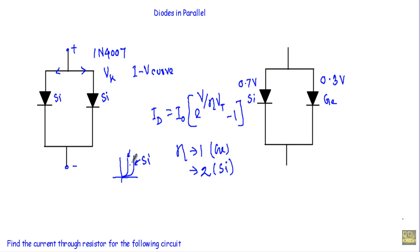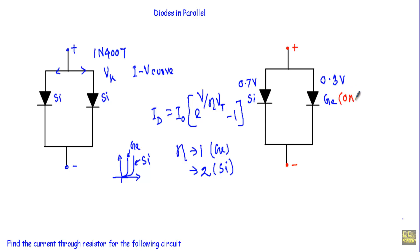The IV curve of germanium will be steeper than silicon's. The germanium diode will draw more current than the silicon diode due to differences in device parameters and environmental conditions. When a positive bias voltage is applied, since the built-in potential of germanium is 0.3V and silicon is 0.7V, the germanium diode will reach the ON state faster than the silicon diode.